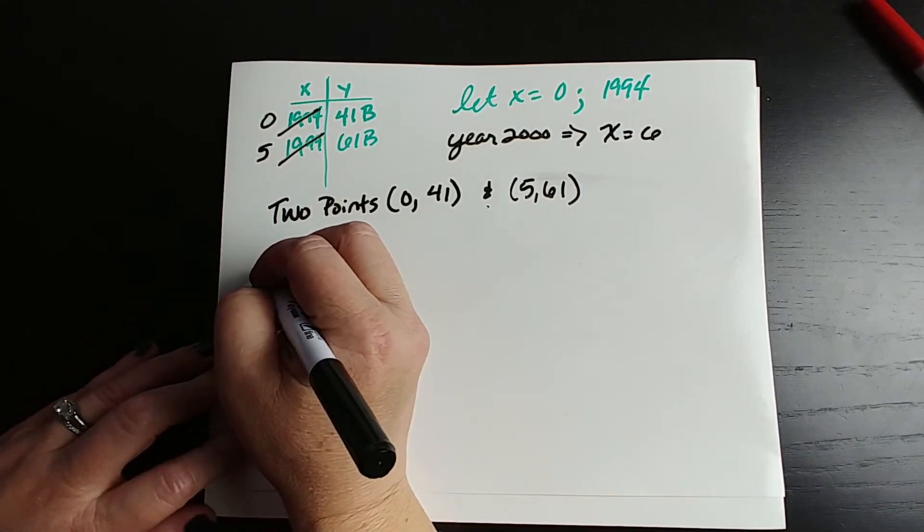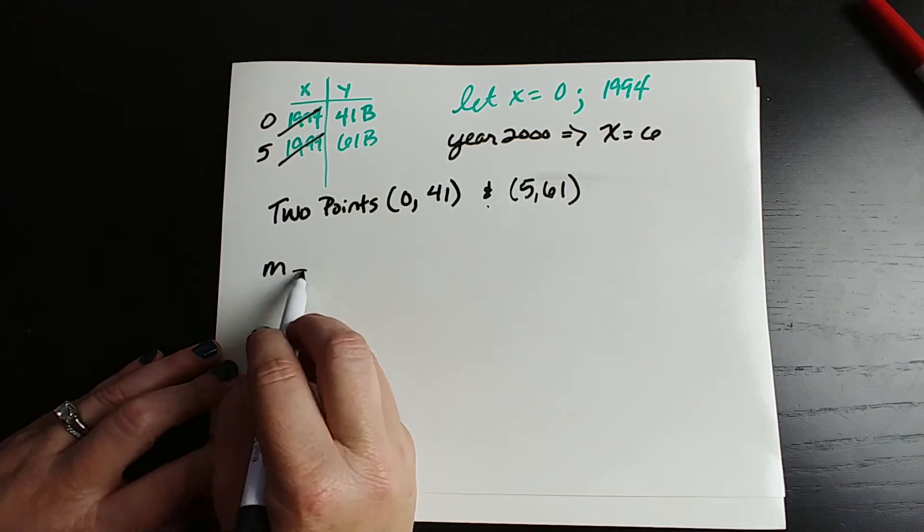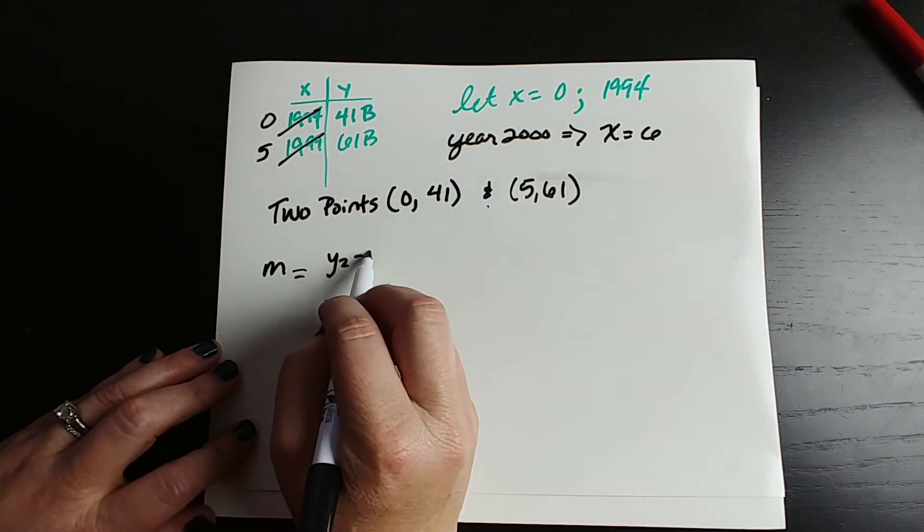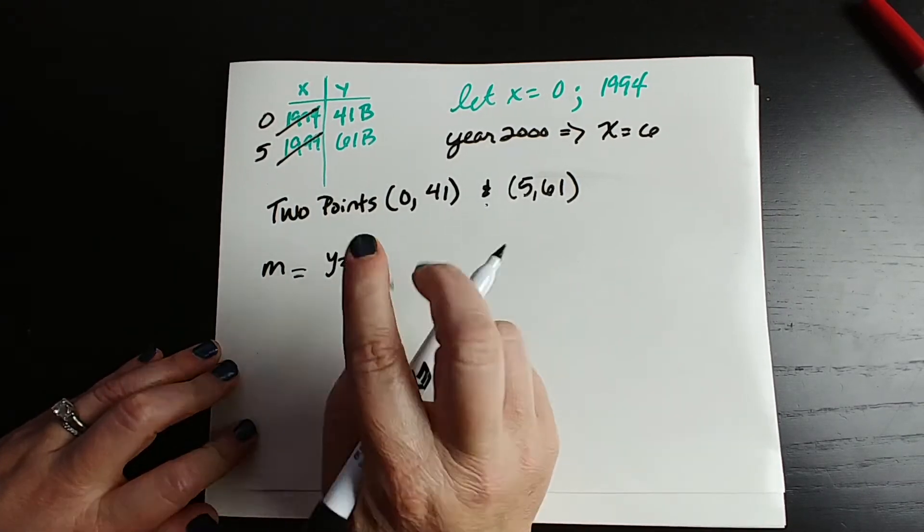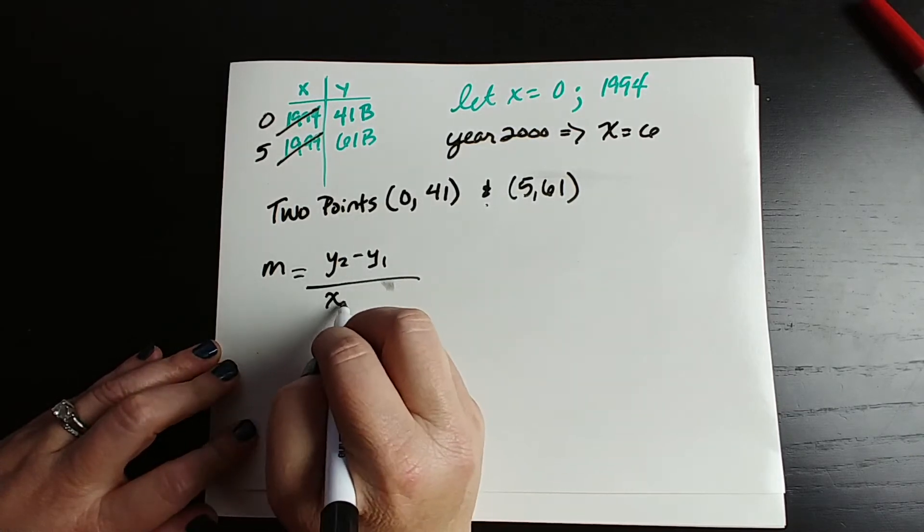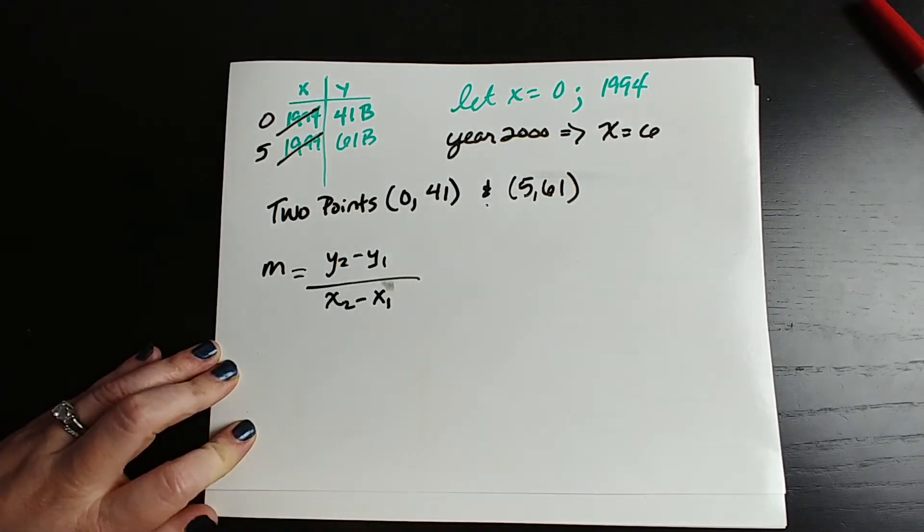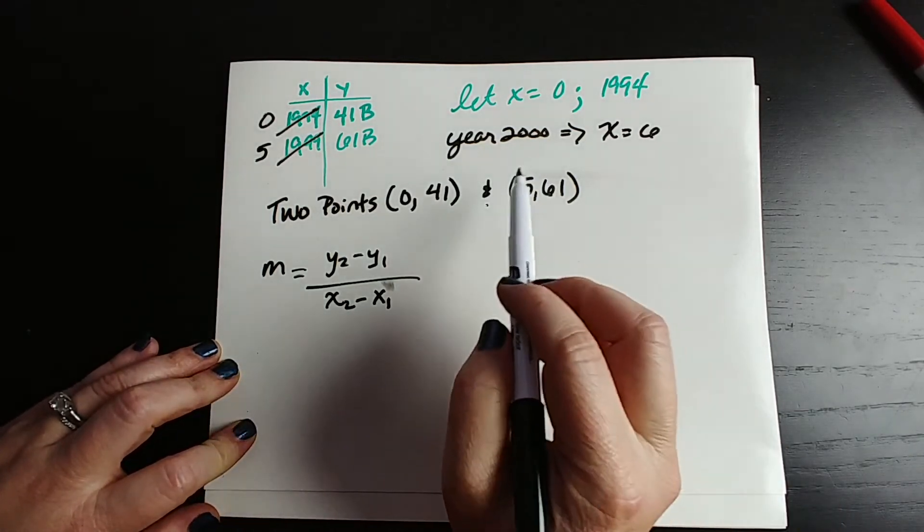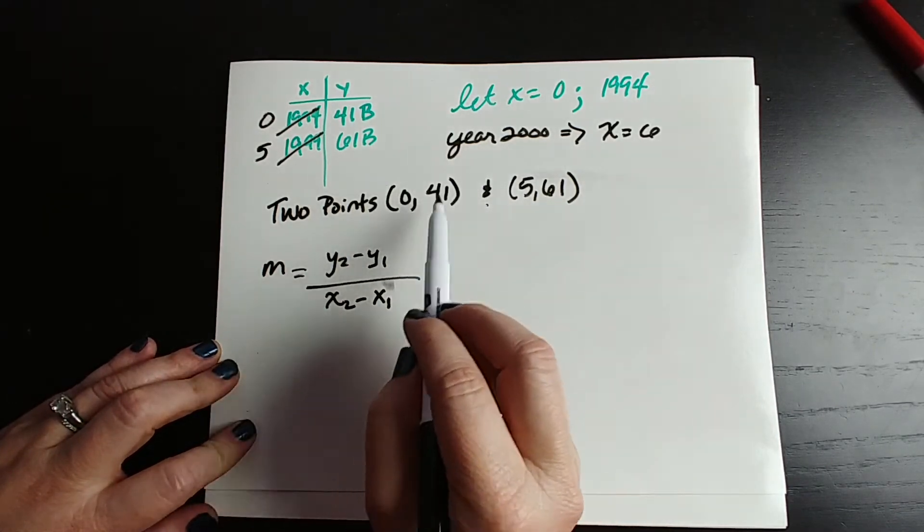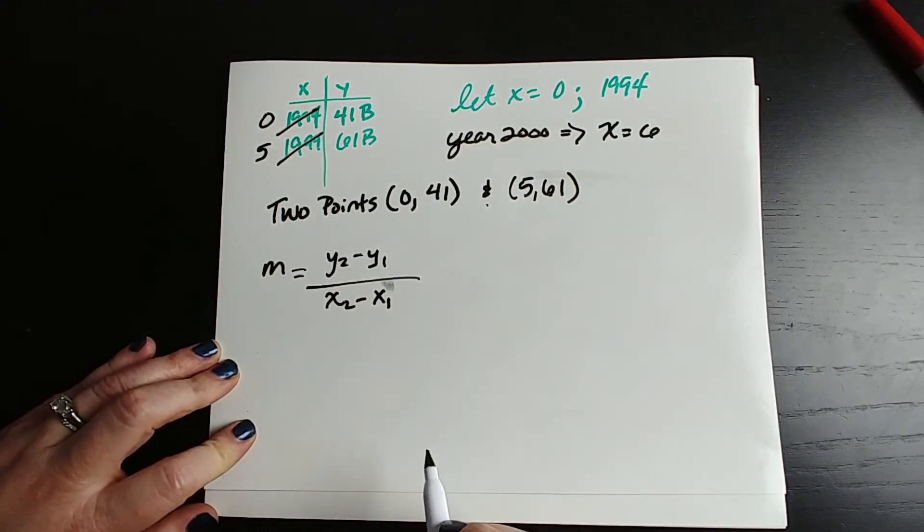So let's do this. If you don't remember slope, we're going to call it m, and it is the change in y. So y2 minus y1 all over x2 minus x1. It makes no difference which one you consider your x1, y1, or x2, y2.